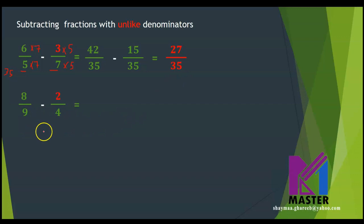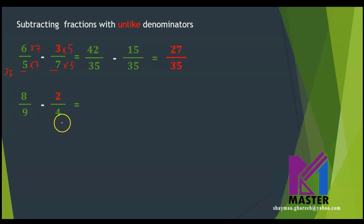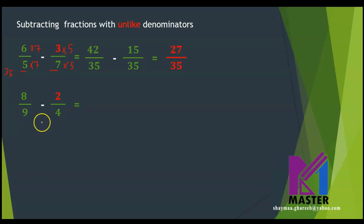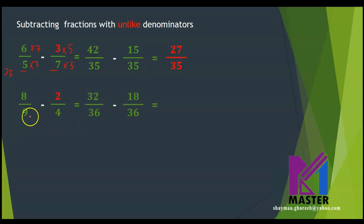Now let's look at this fraction: 8 over 9 minus 2 over 4. In order to change the denominators to be the same, I need to think of a common multiple or the least common multiple between 9 and 4. What do you think? What is the least common multiple between 4 and 9? Yes, it is 36.